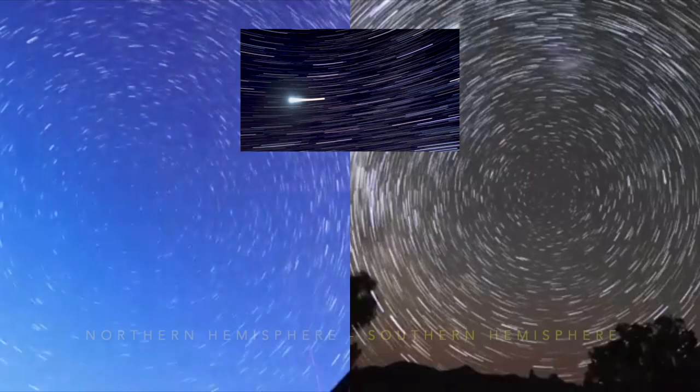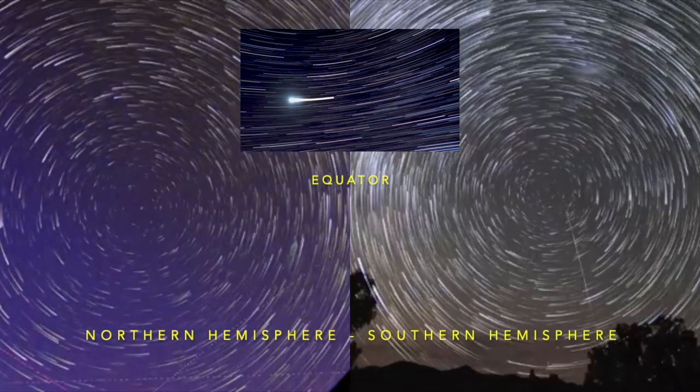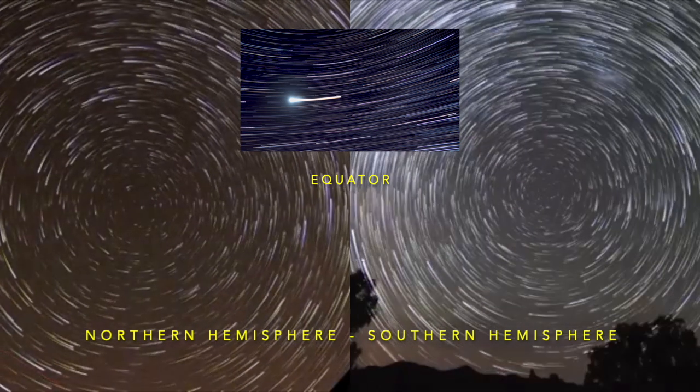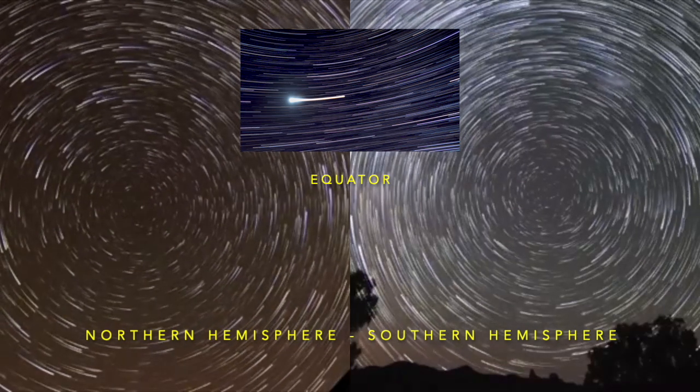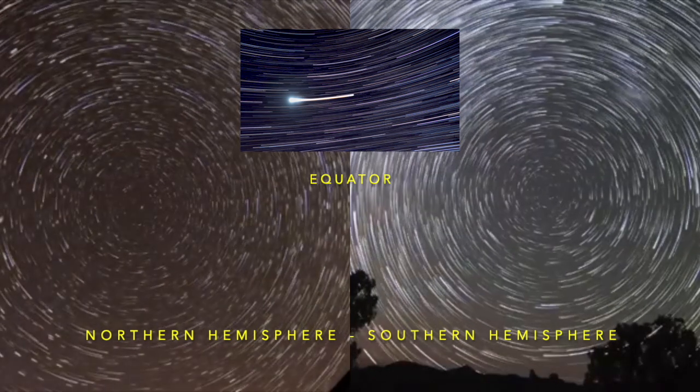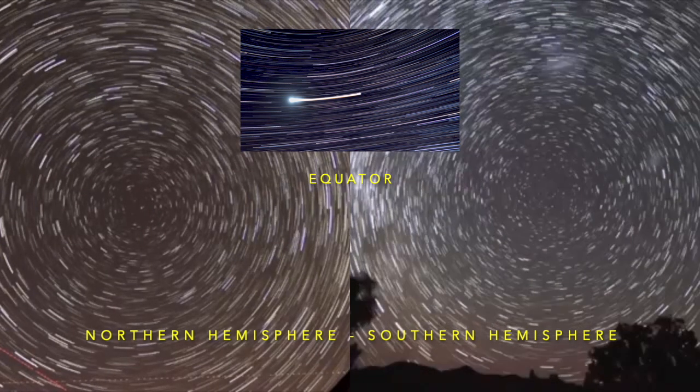Why at the north pole do we only see stars rotating around Polaris anti-clockwise, at the equator the stars move from east to west, and the south pole we see stars rotating around Alpha Centauri clockwise? Amateurs can prove this with simple long exposure cameras set over a specific length of time.